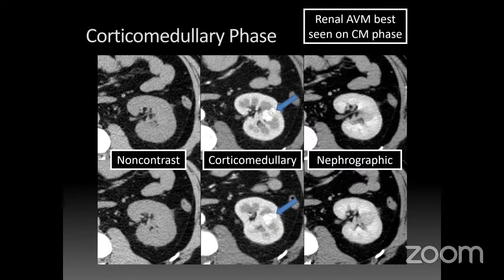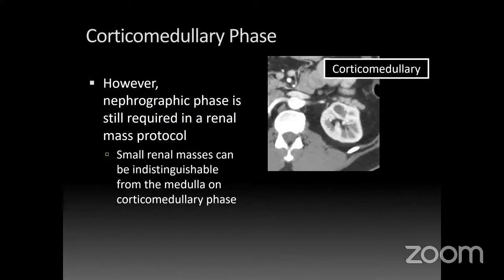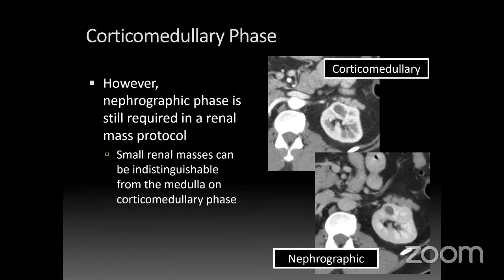The corticomedullary phase is great for AVMs, but you really need the nephrographic phase as a baseline — that's why most renal mass protocols use just non-contrast and nephrographic phases, to minimize radiation and cover major bases. Small renal masses can hide in the medullary pyramids, and they're not seen as well on the corticomedullary phase as they are when outlined on the nephrographic phase.